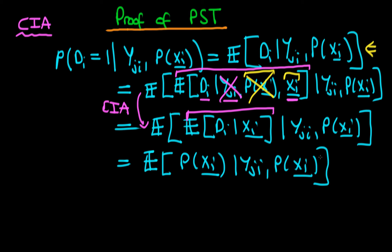But given that we have p of xi, the expected value of p of xi is just p of xi, right? So we can rewrite this whole thing just simply as the propensity score. And note that this, importantly, is not a function of yji.